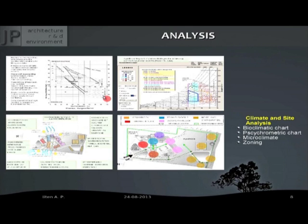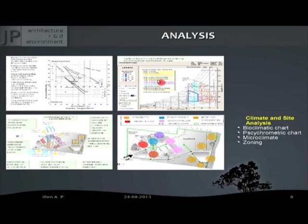This slide shows the type of analysis that can be done. There is a hand-based tool called the bioclimatic chart, which you can use to analyze the climate and find out the comfort requirements in a particular region. The next picture shows a chart generated by a software called Climate Consultant, developed by the University of California, Los Angeles. It is free of cost — you can download and use it.